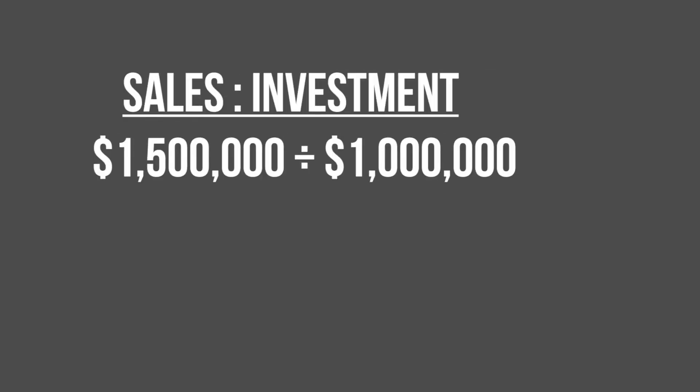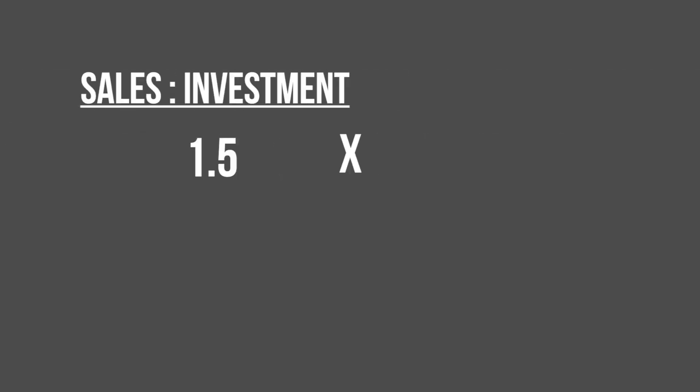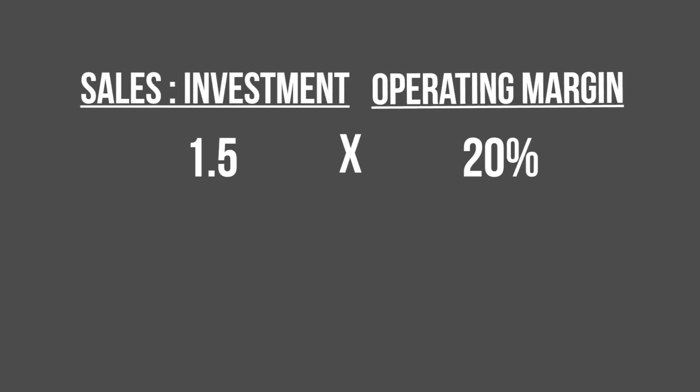Now let's do this in shorthand. First, take your sales of a million and a half dollars. Divide that by your investment of a million dollars. Then multiply this sales-to-investment ratio by your operating profit margin of 20%.